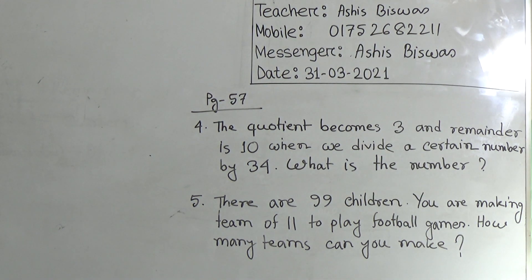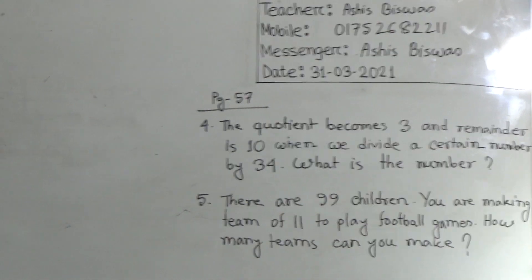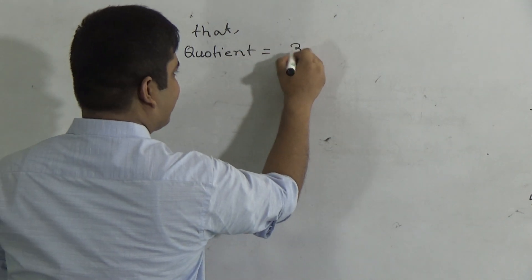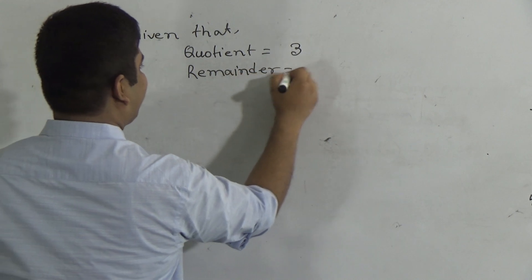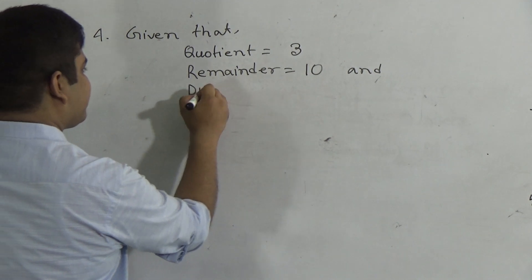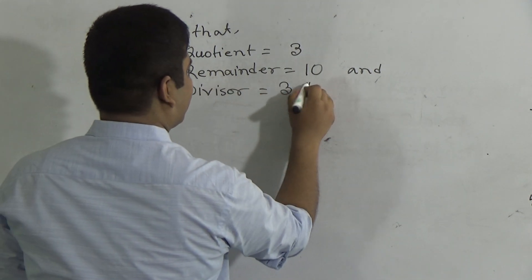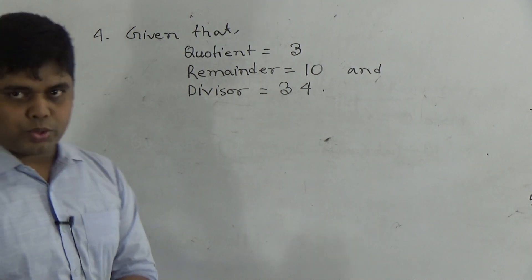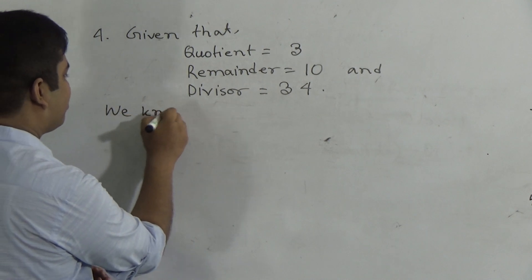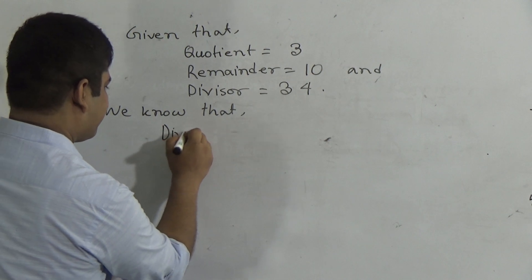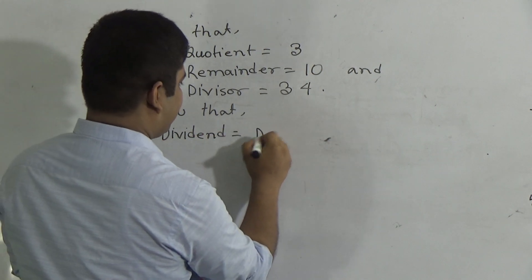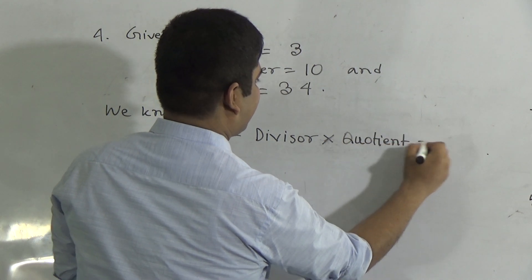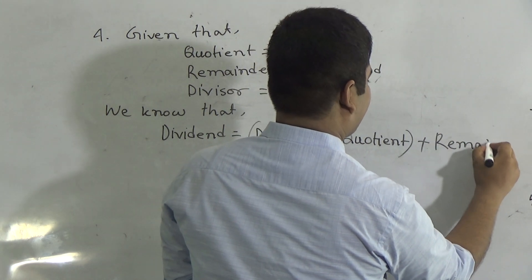In order to solve this math, at first we write given that: quotient is 3, remainder is 10, and divisor is 34. But we do not know the dividend. We need to find out the dividend. At first we write, we know that, then we write the formula. We know that dividend equal to divisor multiply by quotient plus remainder.